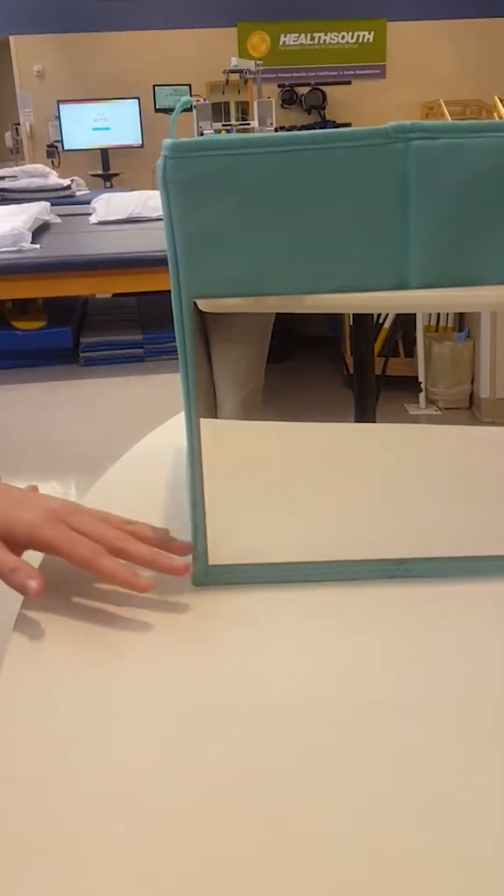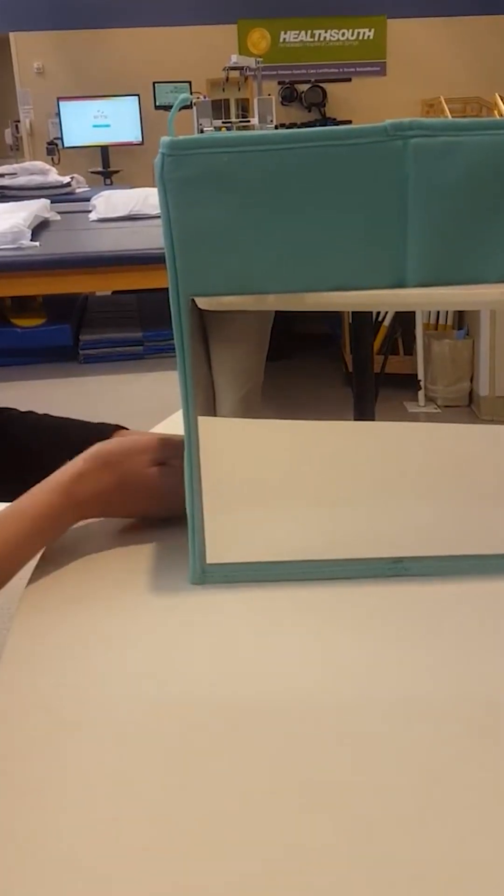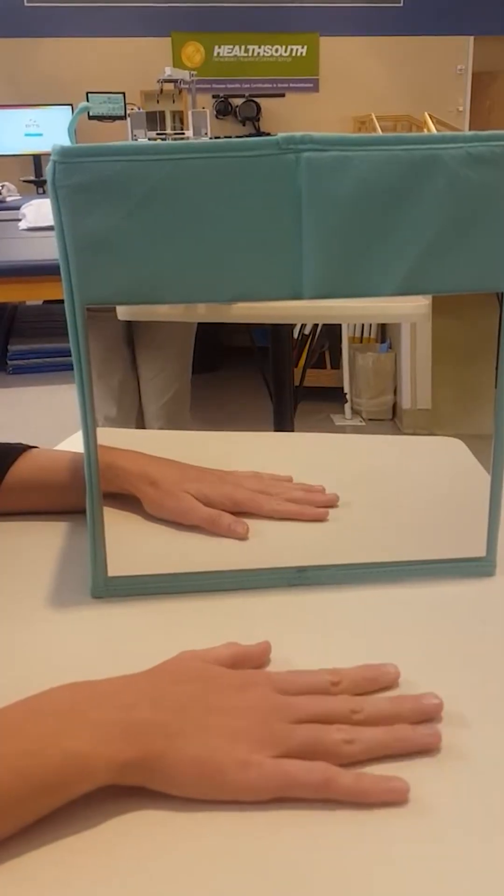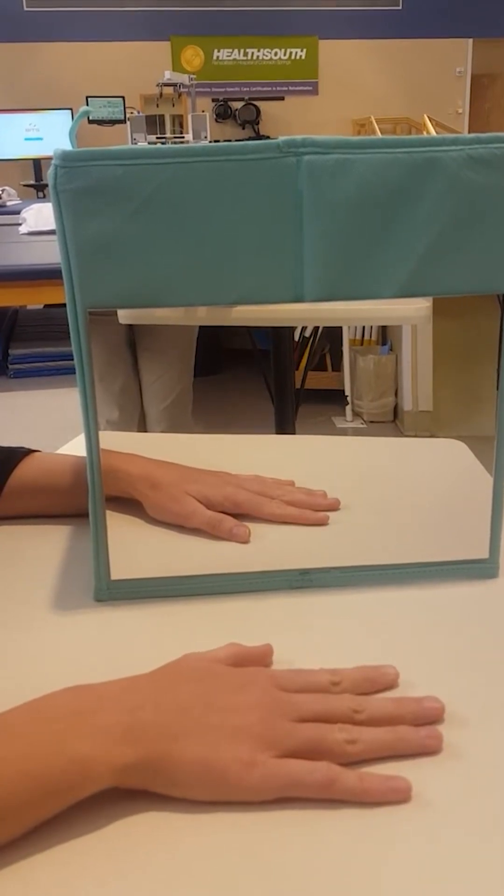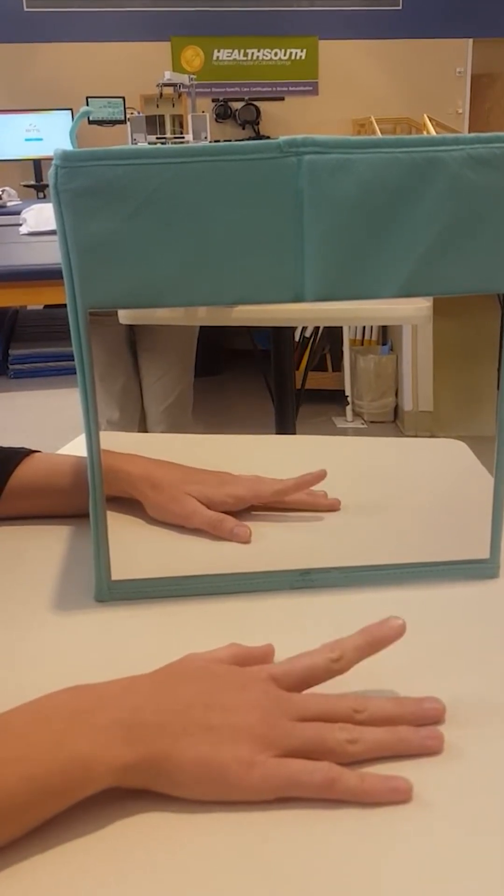In mirror therapy, a mirror is placed in the patient's midline. When the patient looks into the mirror, they see the reflection of the healthy limb, but the brain perceives it as if both limbs are moving normally.